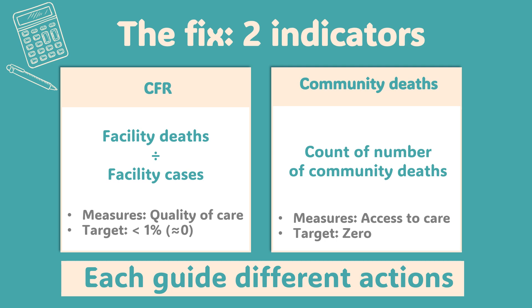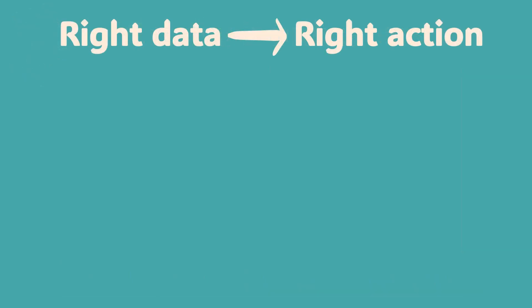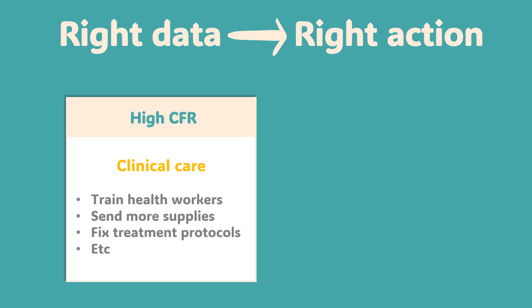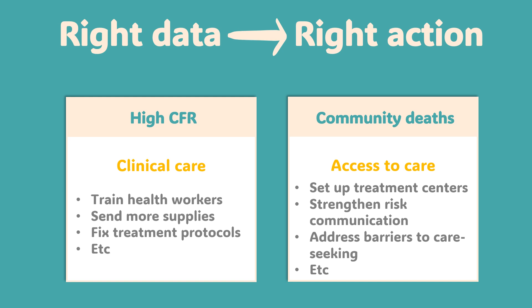Each indicator tells you something specific, and more importantly, something you can act on. In an outbreak, using the right data to make the right decision quickly is what saves lives. Mix your mortality data and you'll misdiagnose the crisis. Get the indicators right and you'll direct interventions exactly where they're needed. When CFR is high, you know you need to assess clinical care — train health workers, send more supplies, fix treatment protocols. When community deaths occur, you know you need to get out into the communities, set up treatment centers where people are dying, strengthen risk communication, and address barriers that prevent people from seeking care.